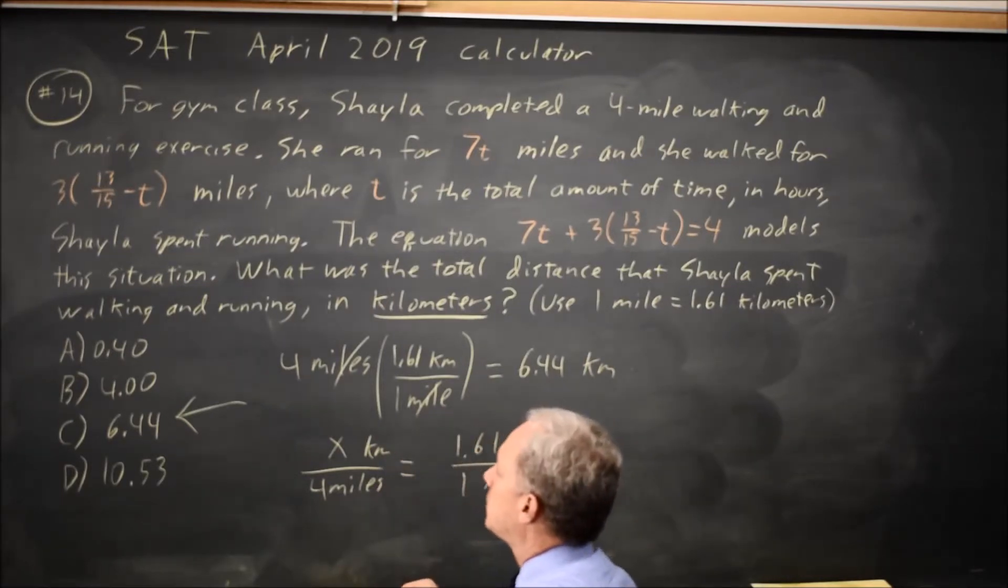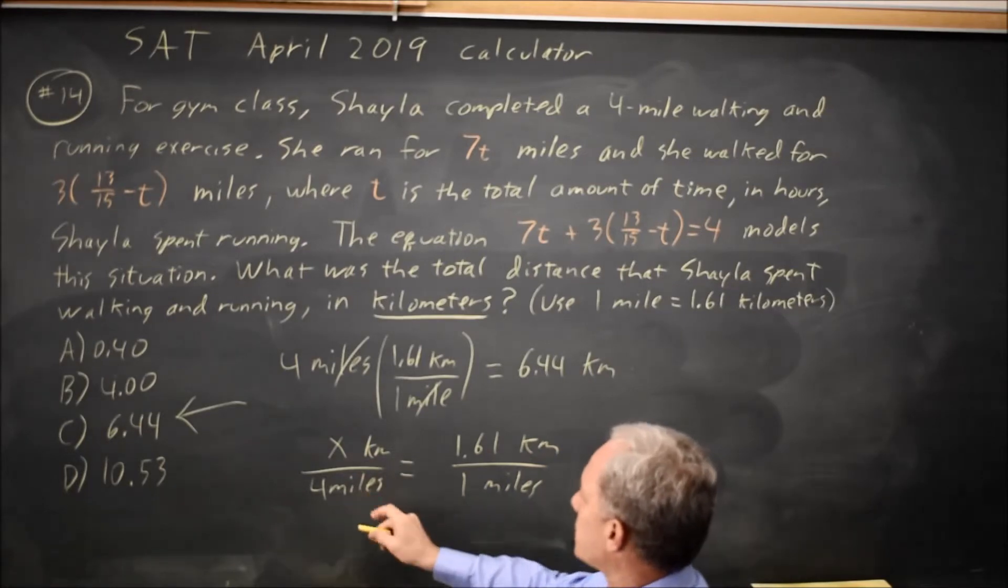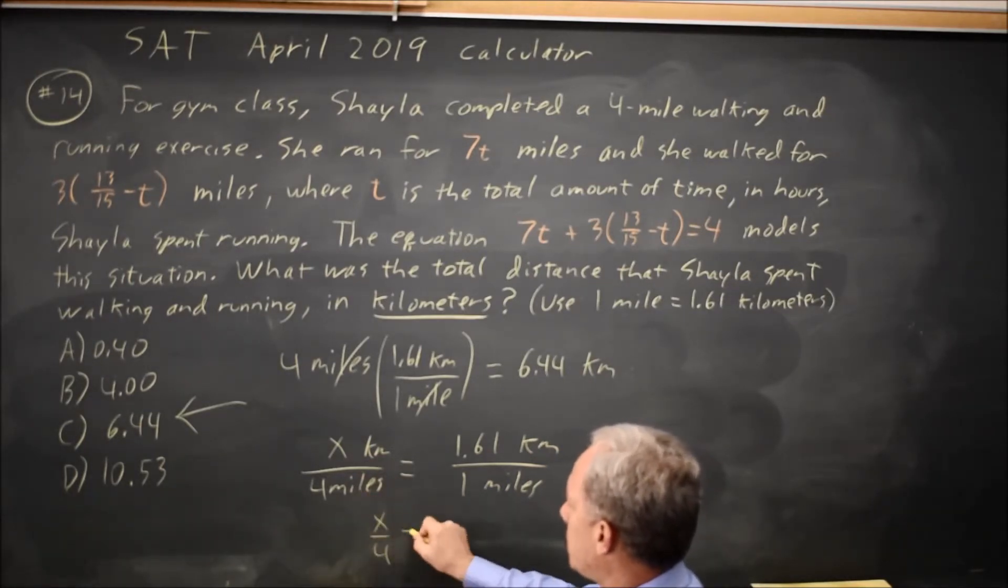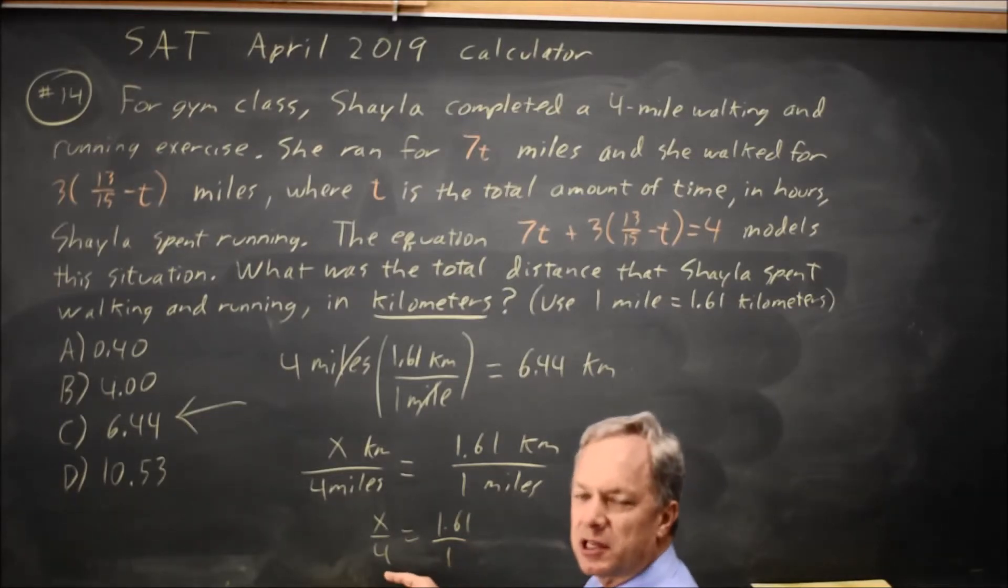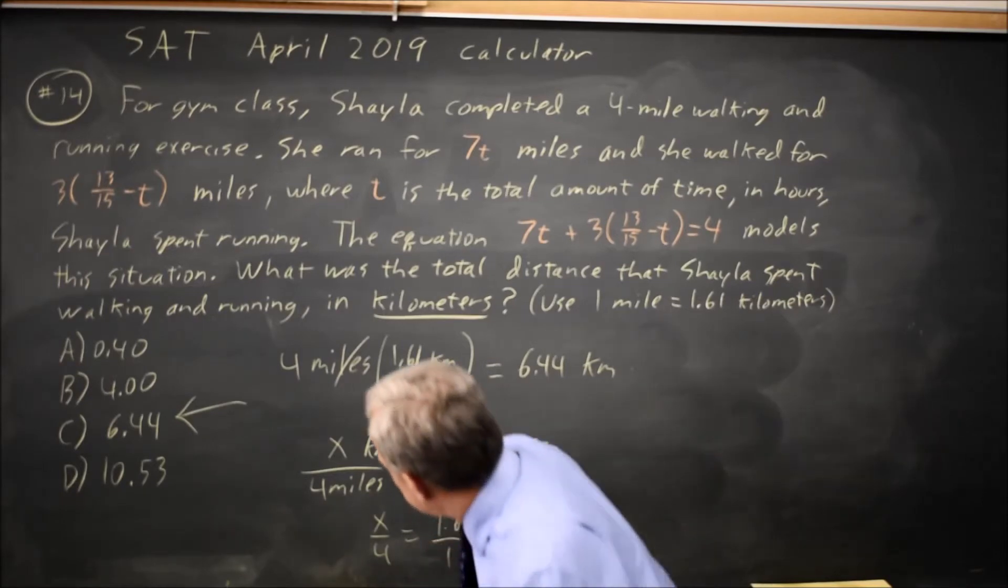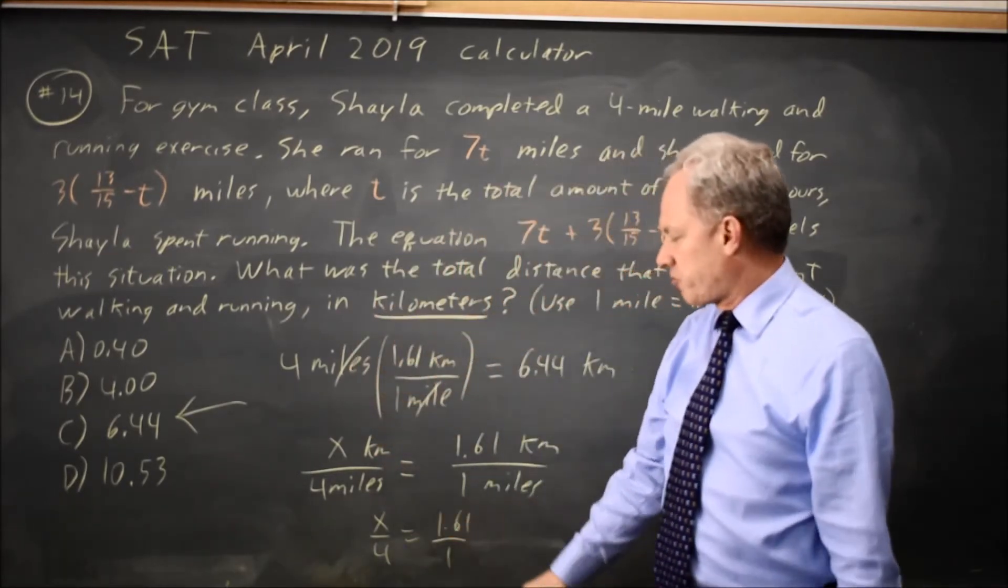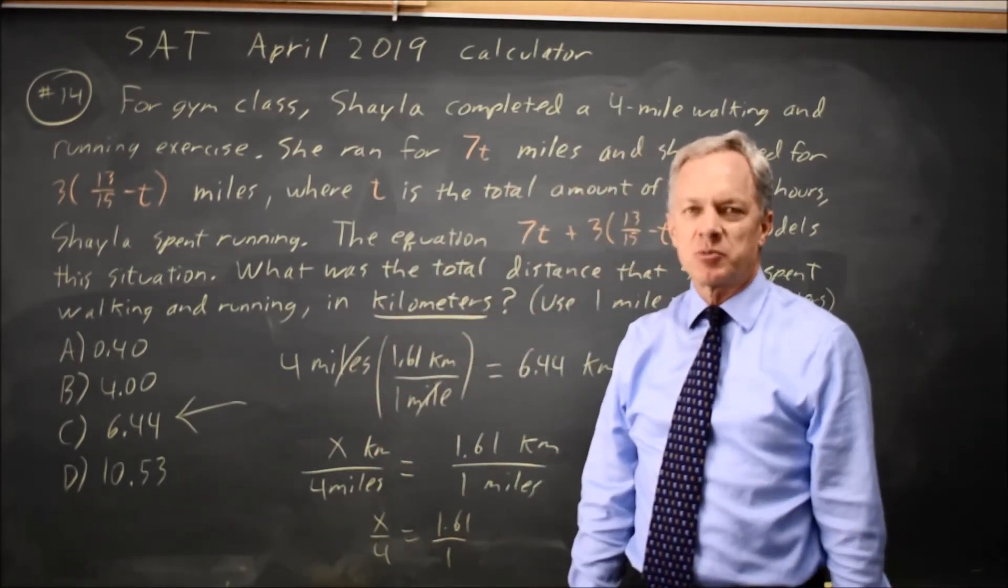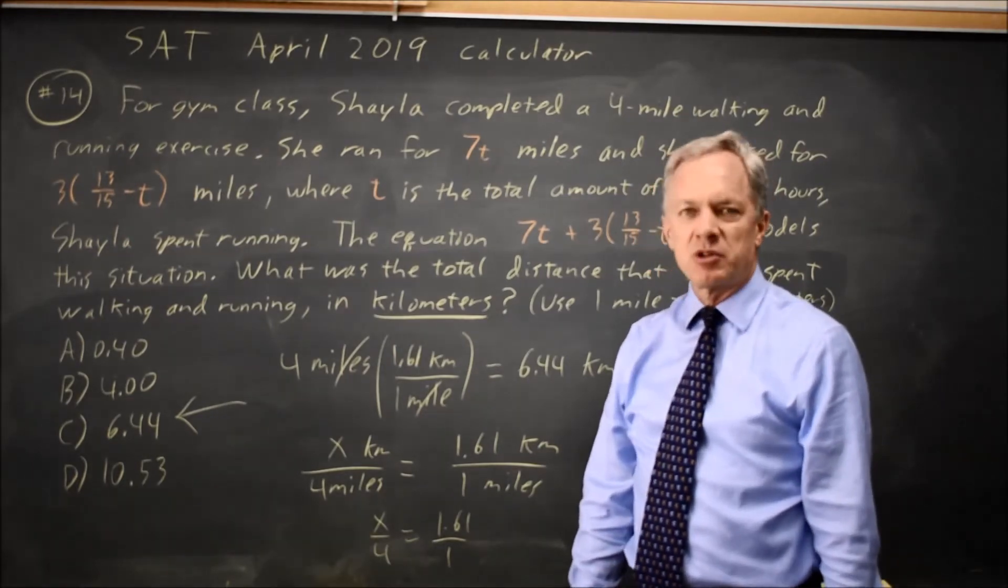Now that I have it set up, it's x over 4 equals 1.61 over 1. I can put the left side in y1, right side in y2 on my graphing calculator and find the intersection, or I can just multiply both sides by 4, and x equals 4 times 1.61, which is 6.44 again.